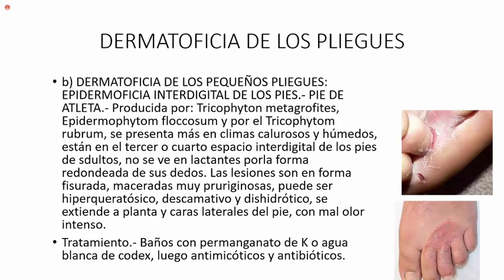La dermatofitosis de los pliegues pequeños: aquí la patología más importante sería el pie de atleta, producida por tres hongos: el Trichophyton mentagrophytes, el Epidermophyton floccosum y el Trichophyton rubrum. Se presenta más en climas calurosos y húmedos, en el tercer o cuarto espacio interdigital de los pies de adultos; no se ve en los lactantes porque sus deditos tienen forma redondeada y no permite que haya humedad. Las lesiones son fisuradas, maceradas, muy pruriginosas; puede ser hiperqueratósico, descamativo y dishidrótico.